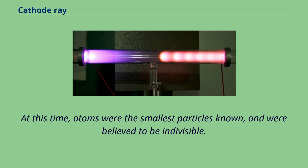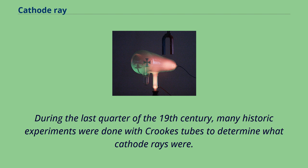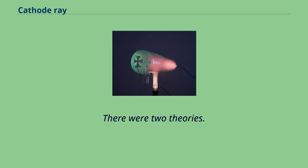At this time, atoms were the smallest particles known, and were believed to be indivisible. What carried electric currents was a mystery. During the last quarter of the 19th century, many historic experiments were done with Crookes tubes to determine what cathode rays were. There were two theories.